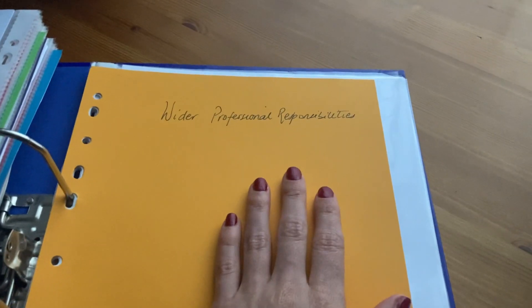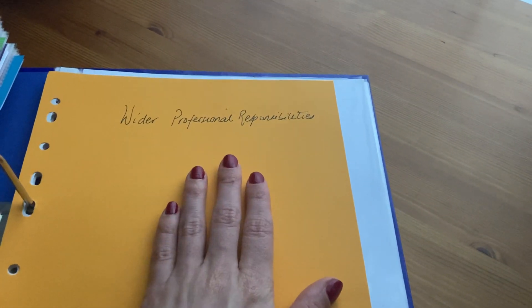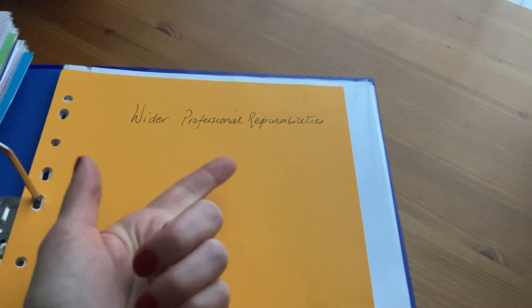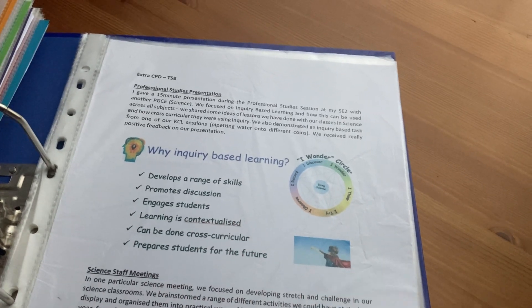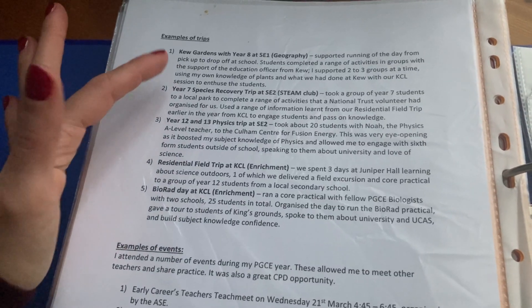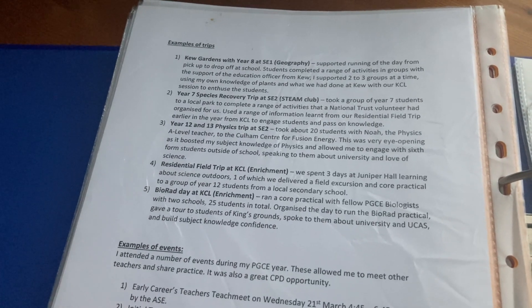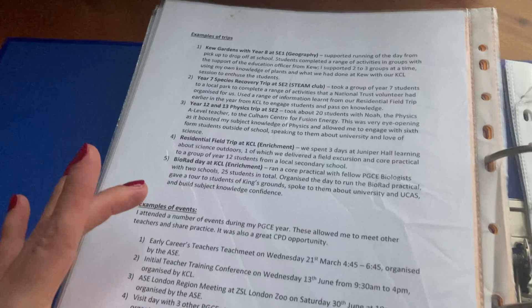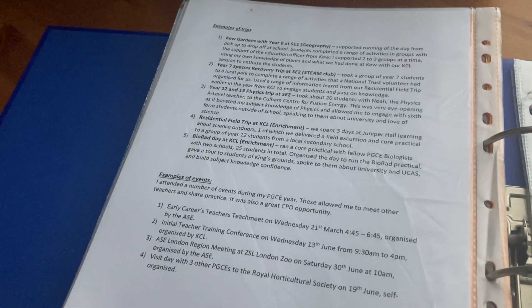For wider professional responsibilities, a lot of these are emails. I also included a presentation that I gave to our cohort at the time and a little blurb on any meetings that I attended. Instead of including individual emails for each of these things, I decided it would be more effective to summarise them on paper and split them into trips and events, detailing information about the additional responsibilities I undertook.